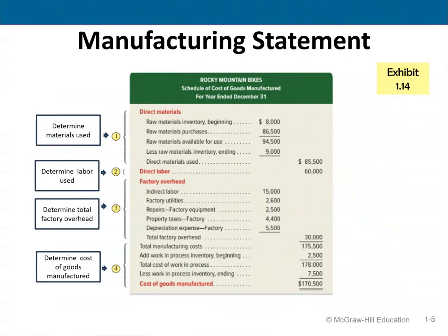Let's take a more in-depth look at this schedule. We first determine materials used, starting with direct materials: we add raw materials beginning, then add purchases to get raw materials available for sale, then subtract ending inventory to get direct materials used. We add direct labor, then we look at factory overhead — all indirect costs — add that up to get total factory overhead, and add all three to get total manufacturing costs. Then we add beginning work in process and subtract ending work in process to get cost of goods manufactured.